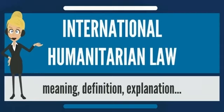The law is mandatory for nations bound by the appropriate treaties. There are also other customary unwritten rules of war, many of which were explored at the Nuremberg War Trials. By extension, they also define both the permissive rights of these powers as well as prohibitions on their conduct when dealing with irregular forces and non-signatories. International humanitarian law operates on a strict division between rules applicable in international armed conflict and internal armed conflict, a dichotomy which is widely criticized.